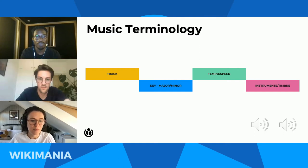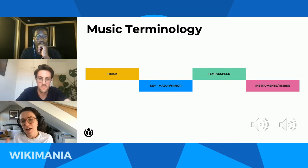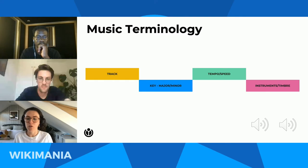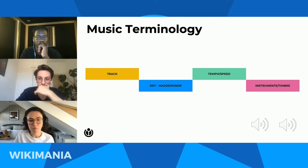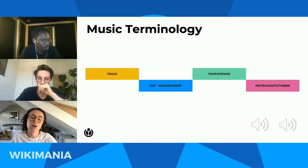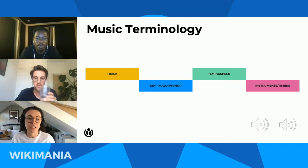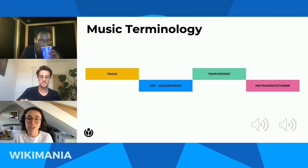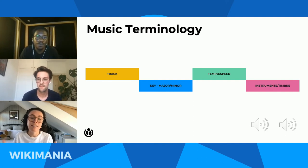Next we have instruments and timbre. Instruments are our tools for creating music — anything from a piano, an oud, or even our voices. There's also a difference between real instruments and synthesized instruments: real or acoustic instruments would typically involve recording a live musician, while electronic instruments are synthesized. Timbre is the characteristic quality of a sound — two instruments playing exactly the same note for the same duration can sound different because of their timbre, which is why you might choose one over another.